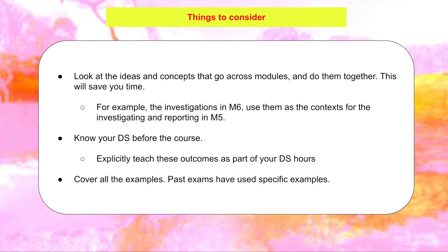One example is that in Module 6, there are investigations on the relationship between reactions and speed. Those could be used as parts of examples in Module 5. In Module 5, you develop your own inquiry questions and do your own investigations, so it might be pertinent to use contexts or examples from Module 6.